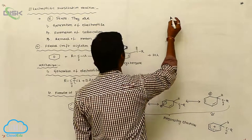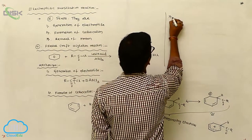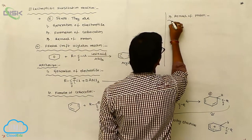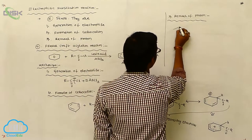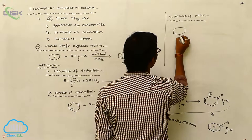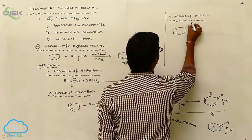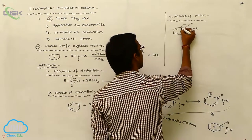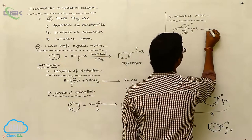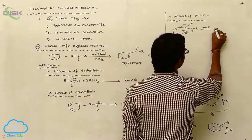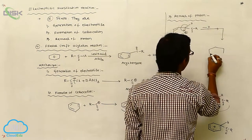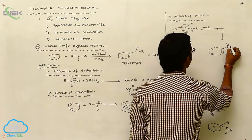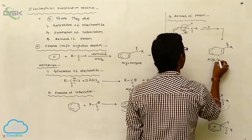The third step is removal of the proton. Considering any one resonating structure of the hybrid — where H, R-C=O and positive charge are present — one of the sigma bonds shifts to the inner ring and loss of proton takes place. This gives the acyl group substituted on the ring, forming acylbenzene.